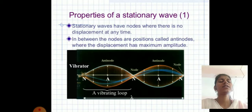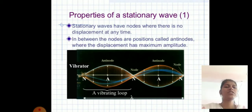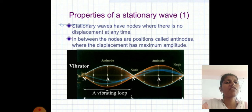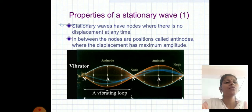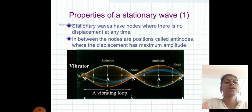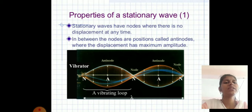Next, properties of stationary waves. First, stationary waves have nodes where there is no displacement at any time. Second, in between the nodes are positions called anti-nodes where the displacement is the maximum amplitude.